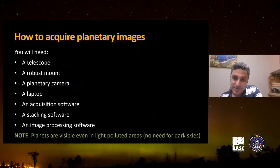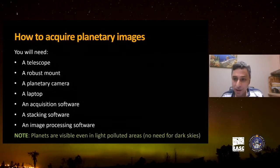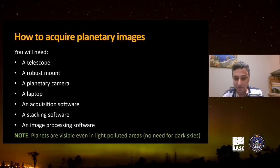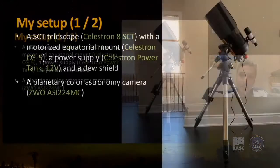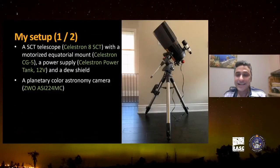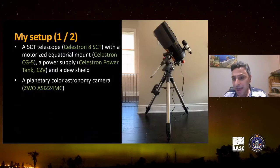A planetary camera is my choice, though there are other options — for example, eyepiece projection with a DSLR camera where you remove the lens and connect the camera body to the telescope. My setup is a Schmidt-Cassegrain telescope, an 8-inch Celestron 8 with a motorized equatorial mount, a power supply, and a dew shield. I'm using a ZWO ASI 224MC planetary color astronomy camera.